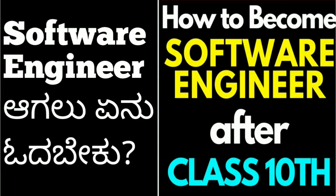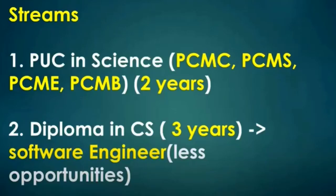First, you will select your path for software engineering. There are two options: PUC or diploma.